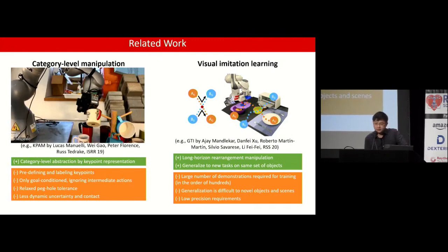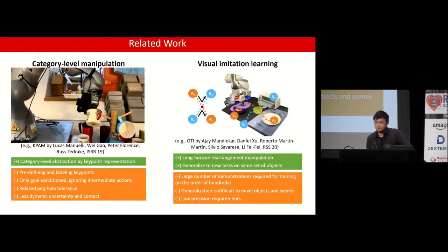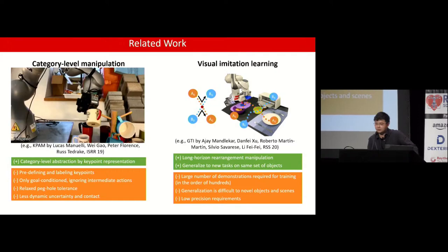For related work, KPAM achieved promising results on category level manipulation using key points for representations. Another related topic is visual imitation learning, where the representative work GTI is able to learn long-horizon rearrangement manipulation and generalize to new tasks on the same set of objects. However, both have limitations that prevent them from achieving human-to-human apprenticeship. In contrast, we overcome some of these limitations — we reduce the demonstration to only one, tackle challenging tasks with dynamic uncertainties and high precision, and remove the requirement of human annotation of key points.